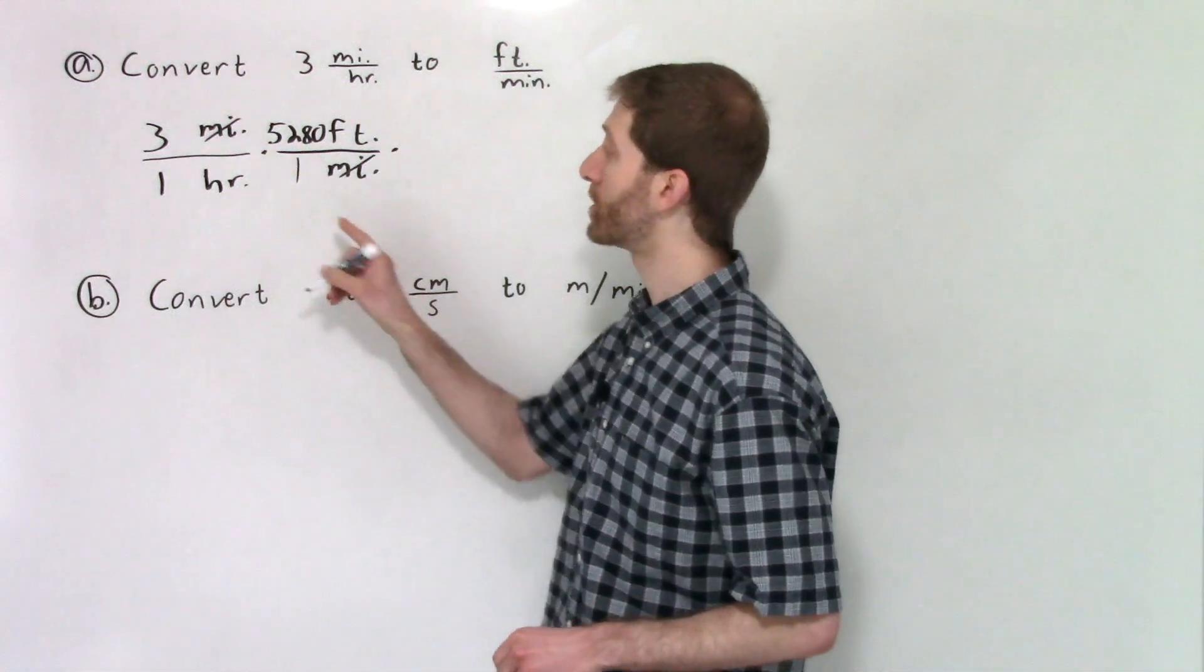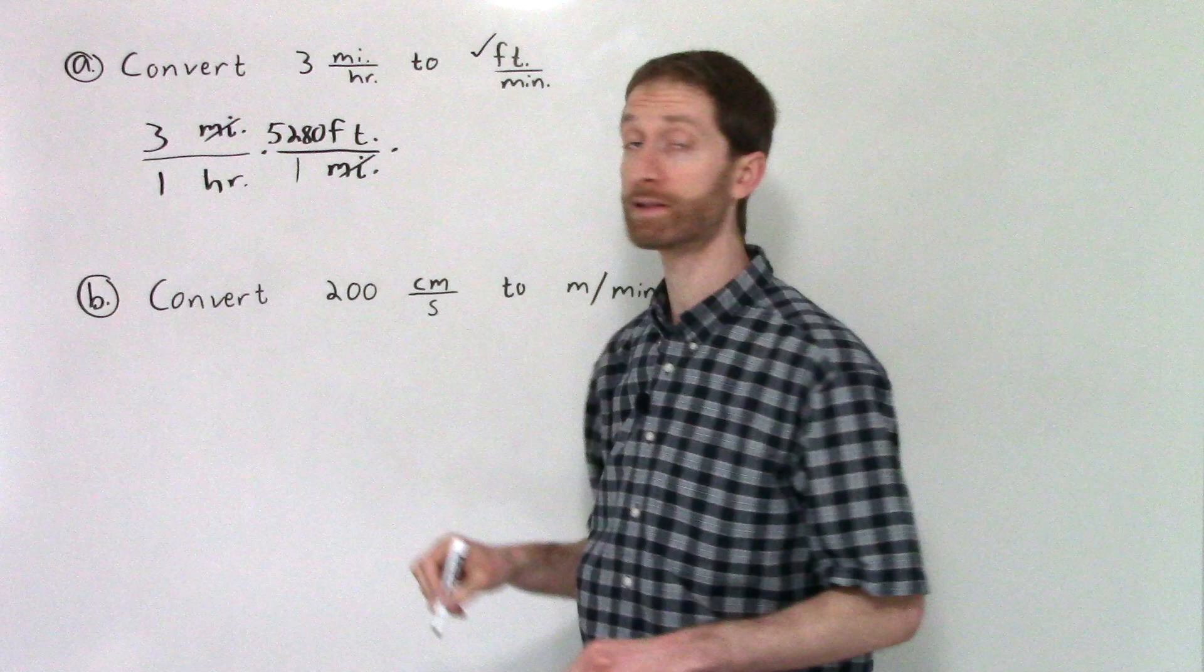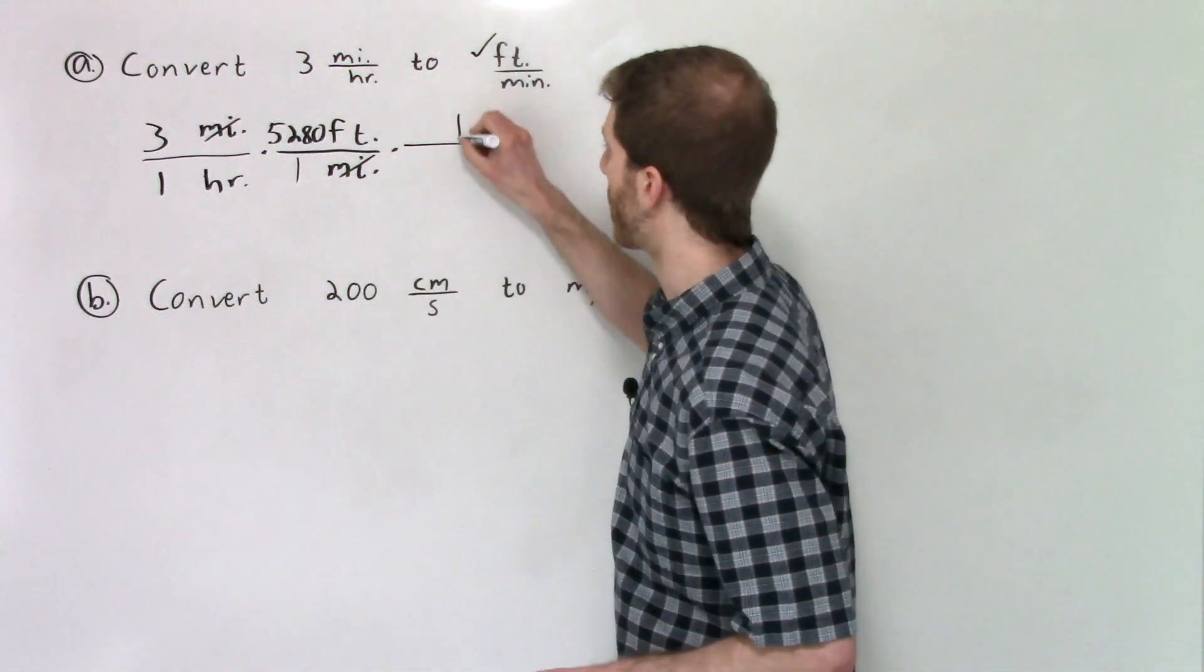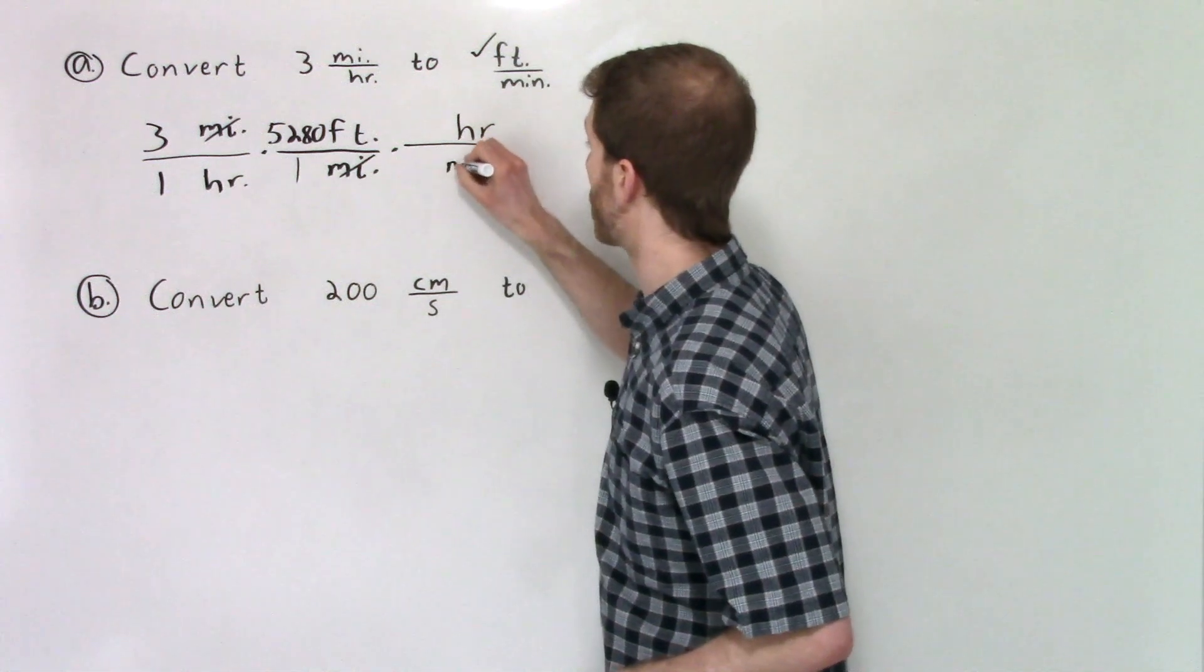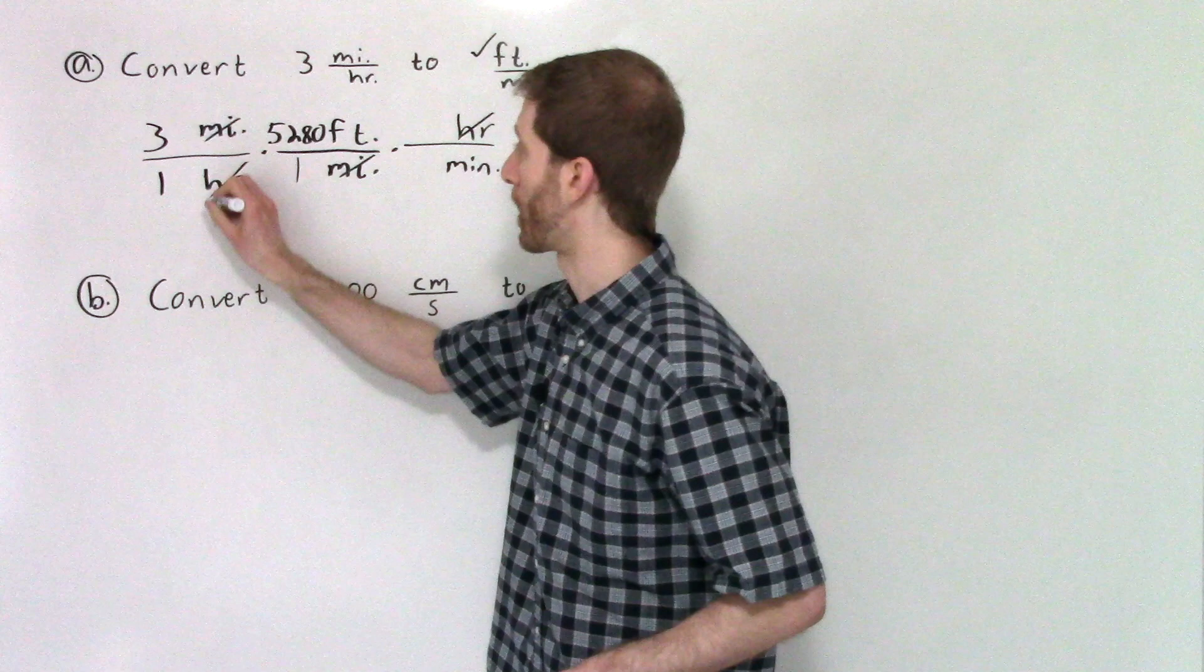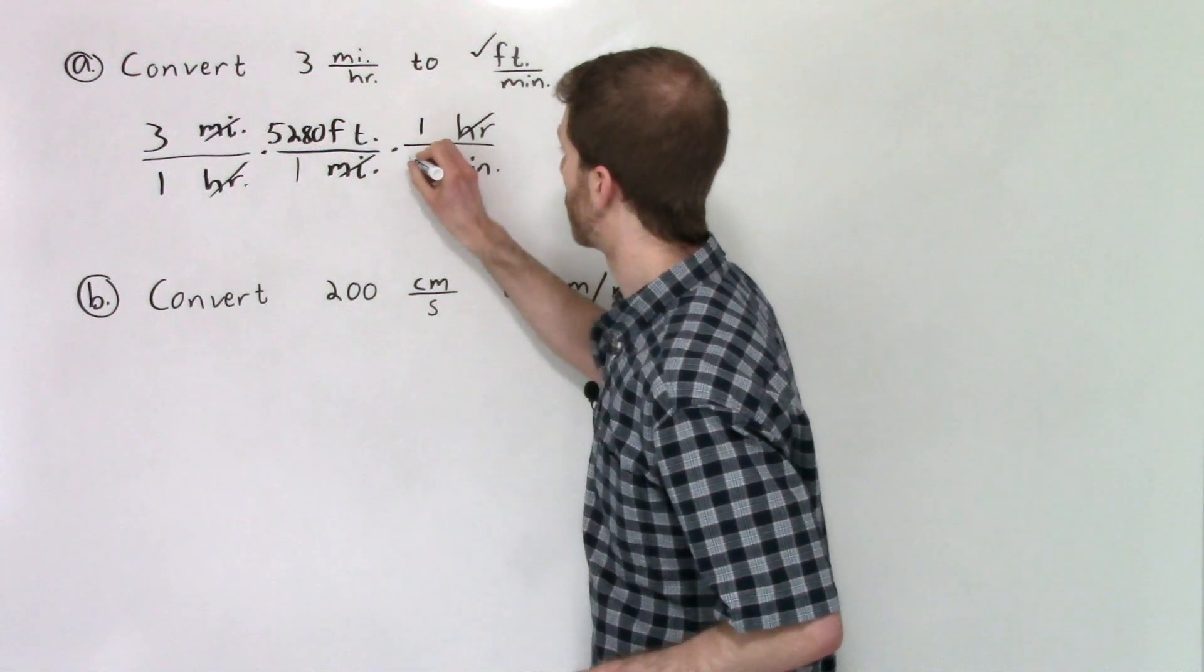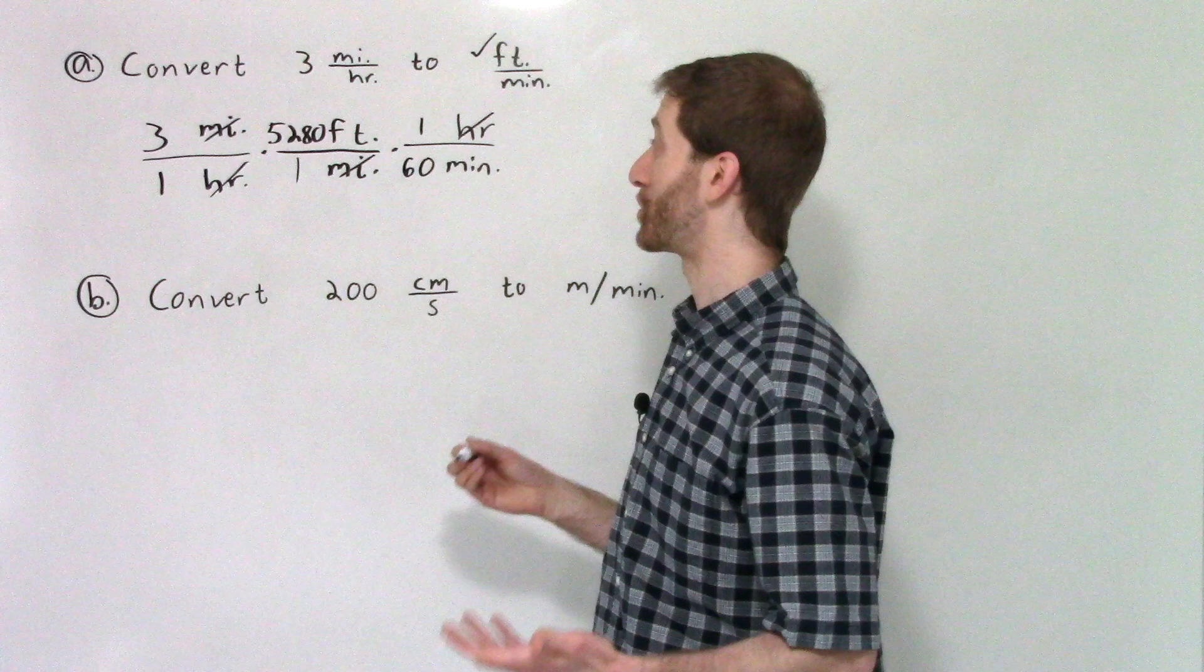Next, I'm going to need to cancel out hours. So we've got feet in the numerator. Check. Now I want minutes in the denominator. Well, how do we get there? Well, I want to cancel out hours. So that needs to go in the numerator so that hours and hours will divide out. And then naturally minutes need to go in the denominator, which is what we wanted at the end of all of this. So hours divide out, which is great. And now we enter in the conversion amounts between hours and minutes. There's one hour for every 60 minutes or 60 minutes for every one hour. Now we're in great shape.